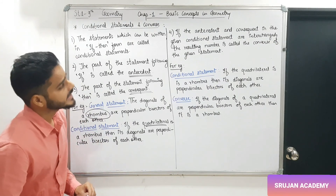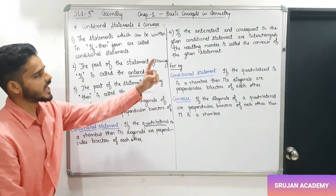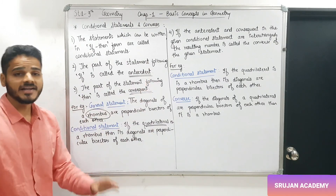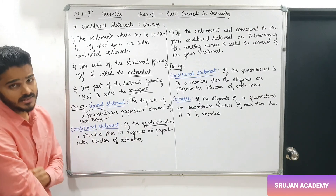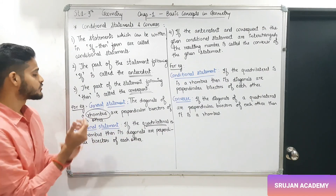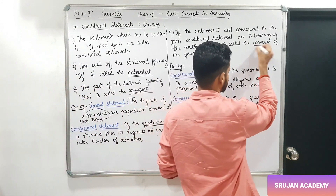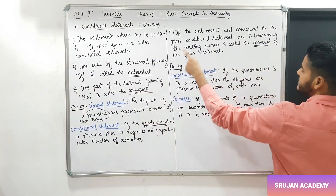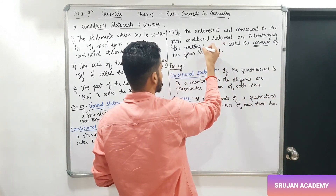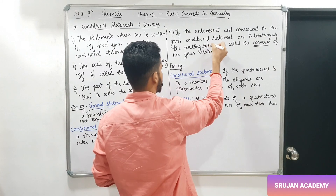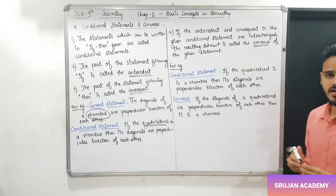If the antecedent and consequent in the given conditional statement are interchanged — antecedent की जगह consequent लिख दो और consequent की जगह antecedent लिख दो — ऐसा करने पर जो statement तयार होता है उसे हम converse कहते हैं. The resulting statement is called the converse of the given statement.